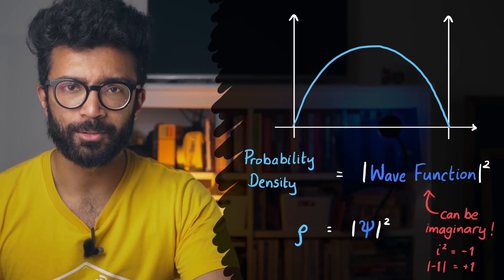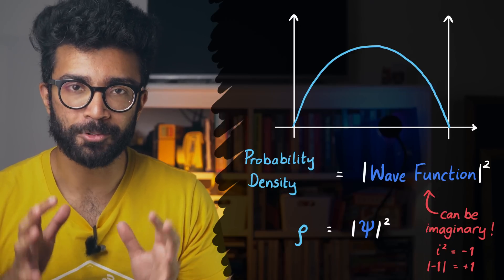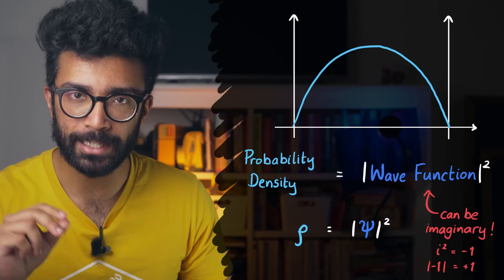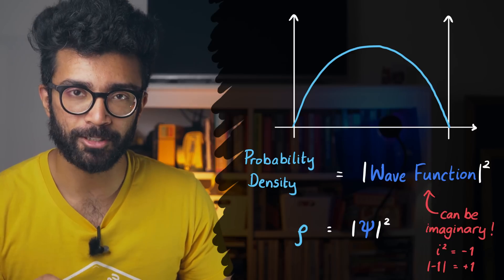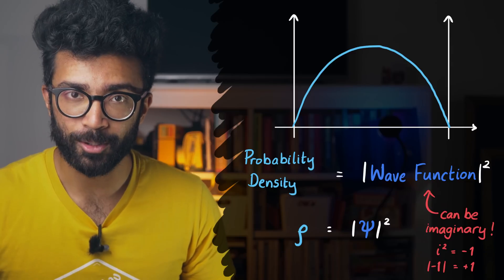Now, at this point, we can ask the question, why do we care about the wave function at all? After all, it's the probability distribution that tells us about how likely we are to find the particle at different positions along our line. So why bother with the wave function at all?